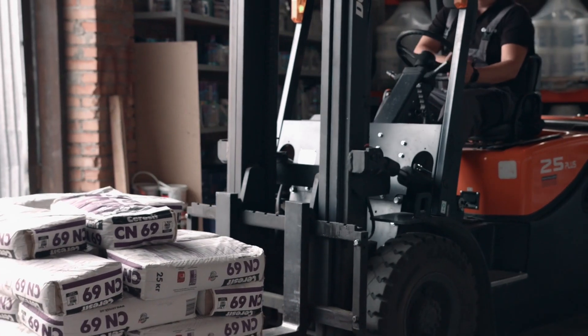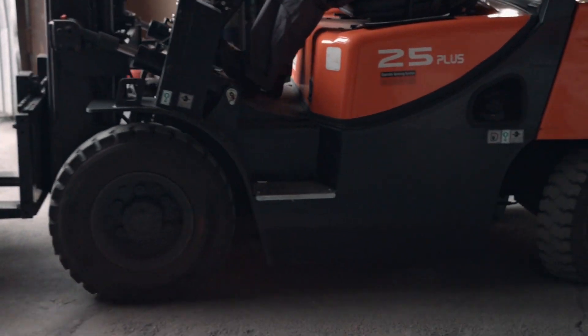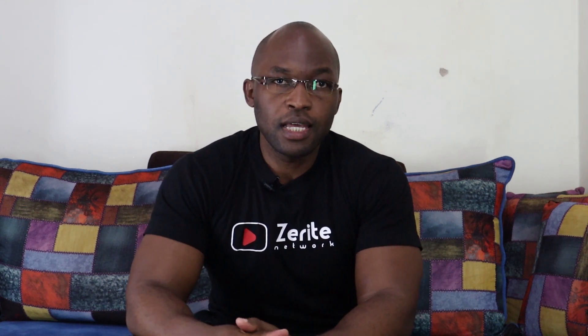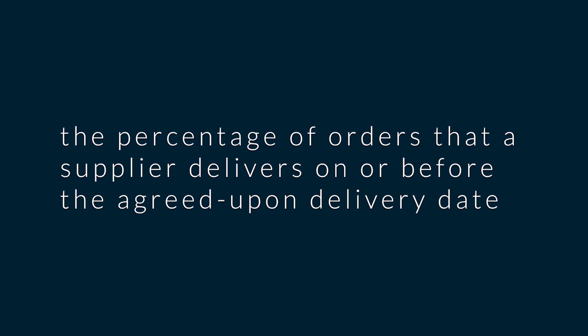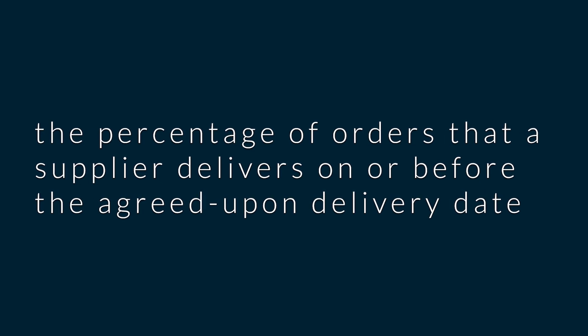For example, when dealing with suppliers, delivery is important — you keep data on how they're delivering goods. A KPI in this case could be something like on-time delivery rate. The question then becomes: how do we measure it? It means the percentage of orders that a supplier delivers on or before the agreed-upon date.